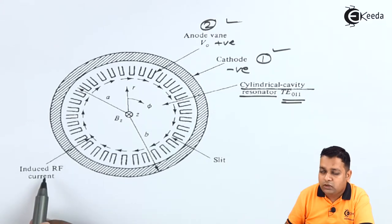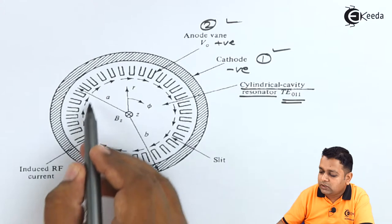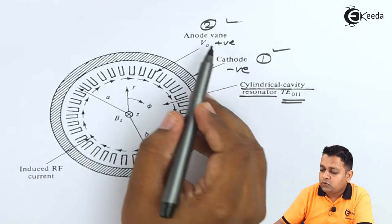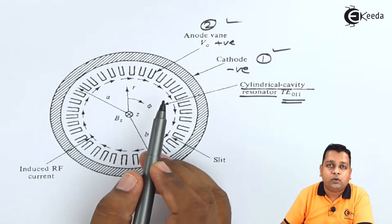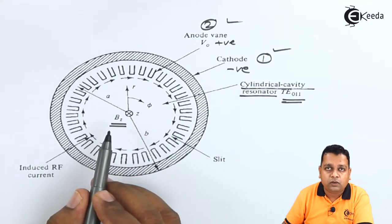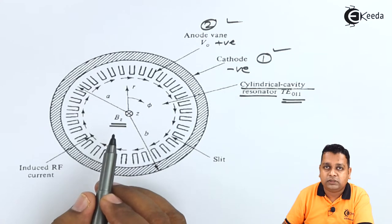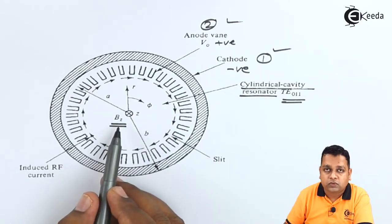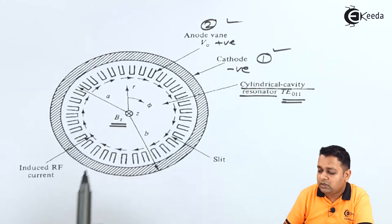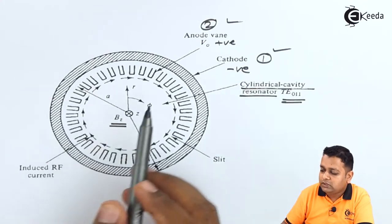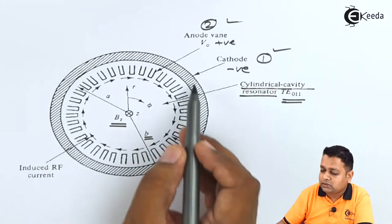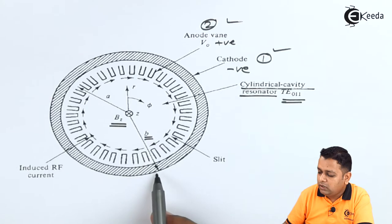The induced RF current will have a particular circulating or rotating direction in the inverted coaxial magnetron. The cathode and anode are shown, and the development of the electric field is also shown in the diagram. There exists a perpendicular orientation of the magnetic flux density — we consider the positive Z direction for the magnetic flux density, so the BZ component direction is marked with a cross inside a circle. Regarding the dimensions of the two electrodes, the radius of the cathode — the outer electrode — is designated with the symbol small d.